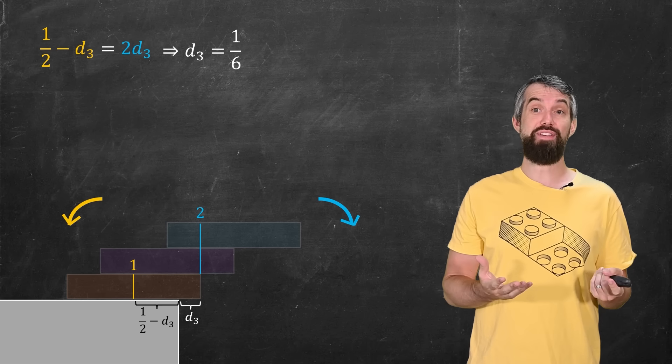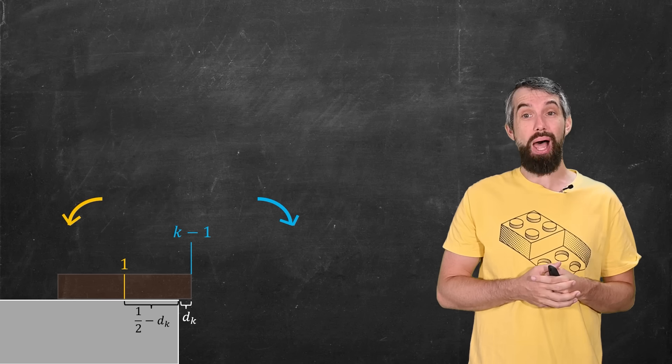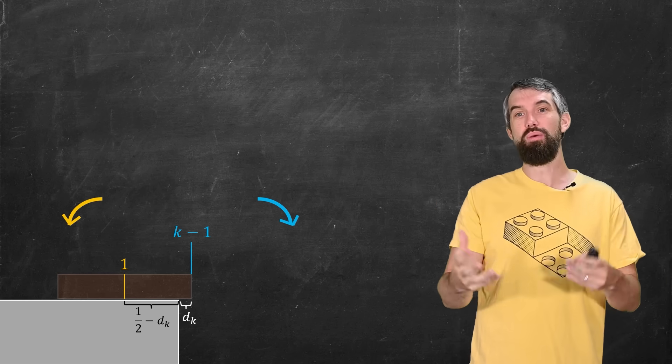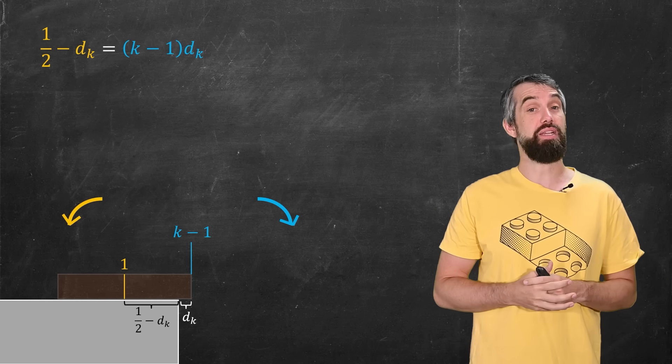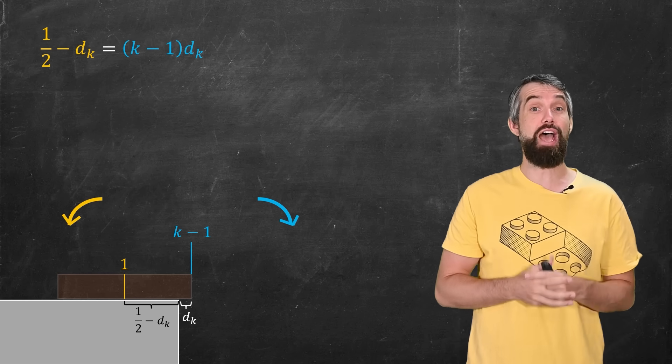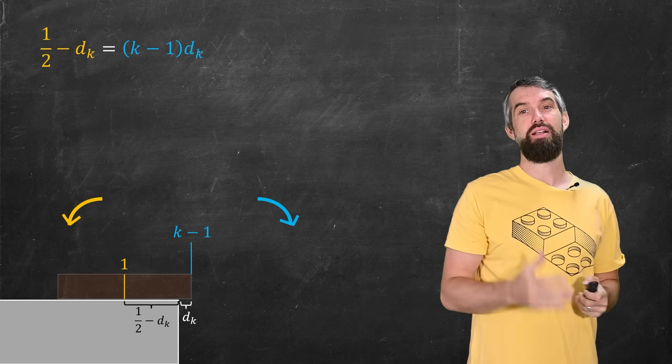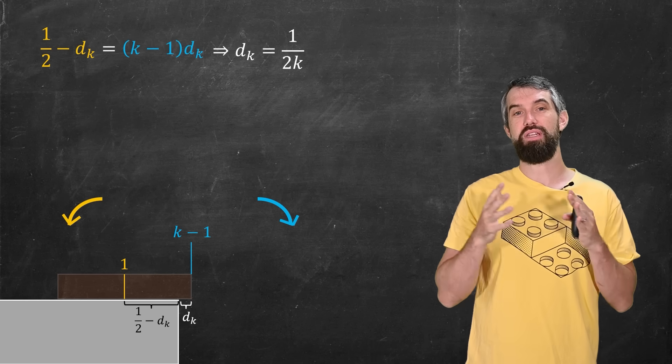In general, if I've had k minus one blocks, I can imagine that's represented by a point mass of weight k minus one located at dk. I equate from the counterclockwise and clockwise and I get one half minus dk is equal to k minus one times dk. Solve for dk, it is one half times k.